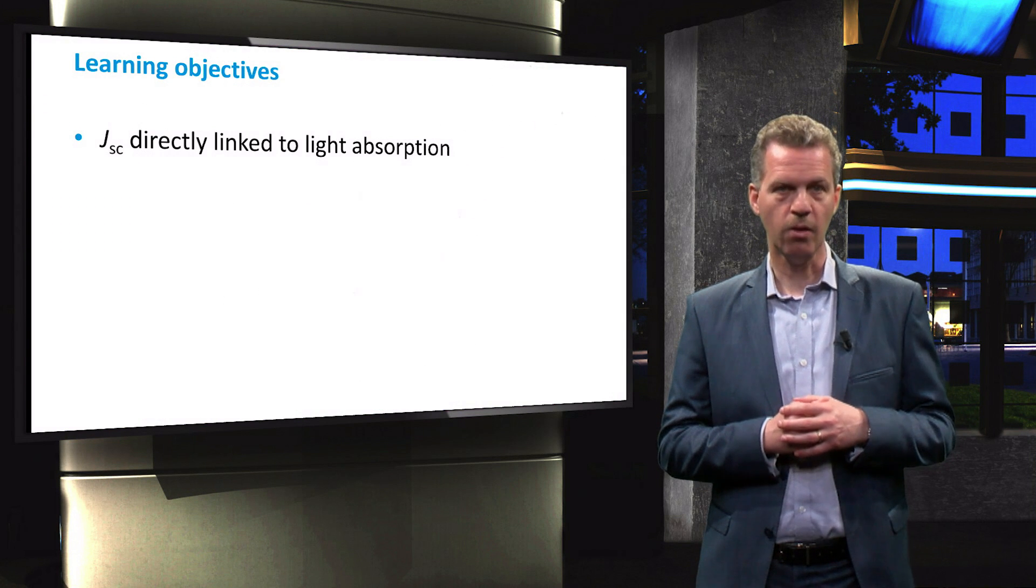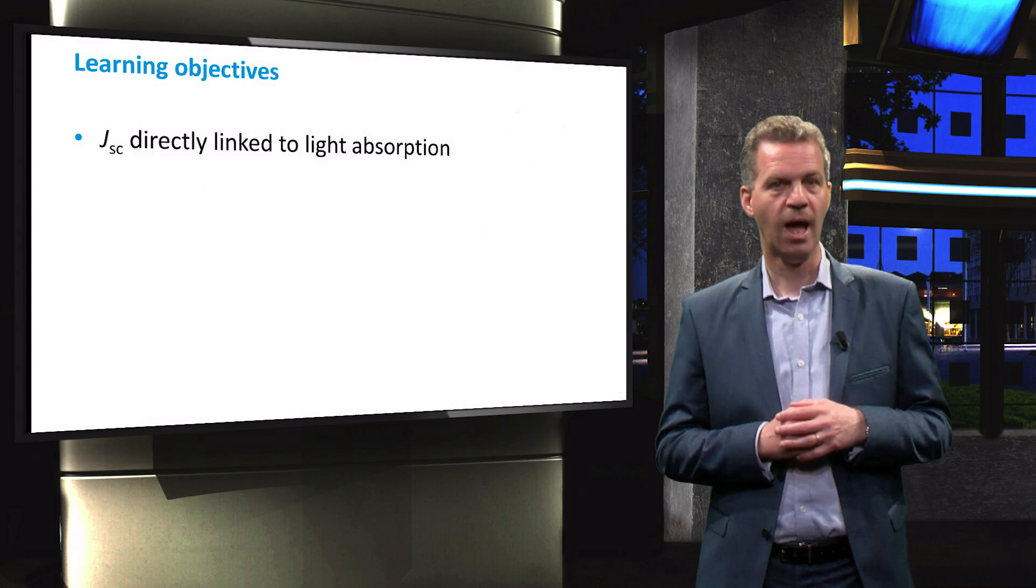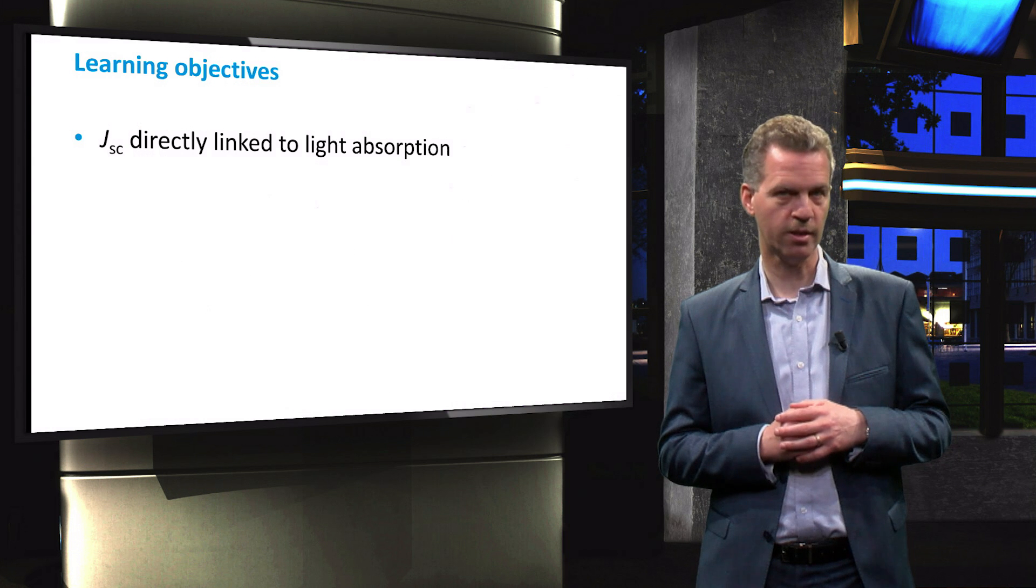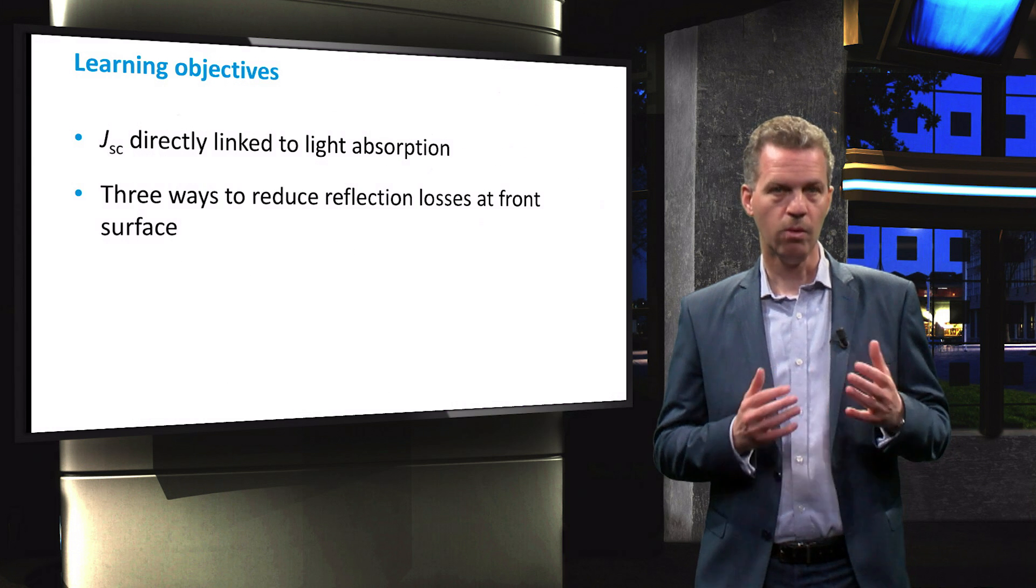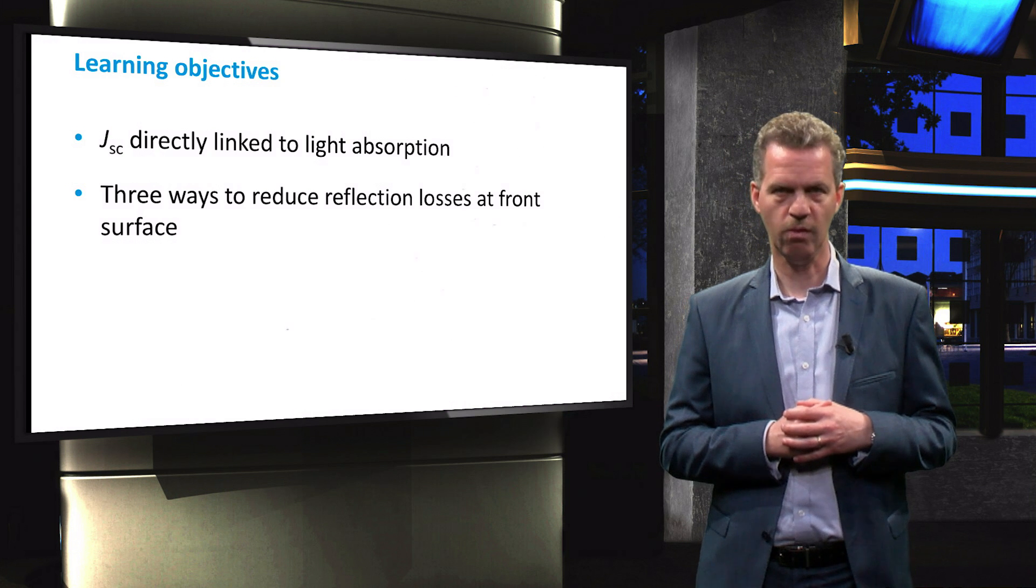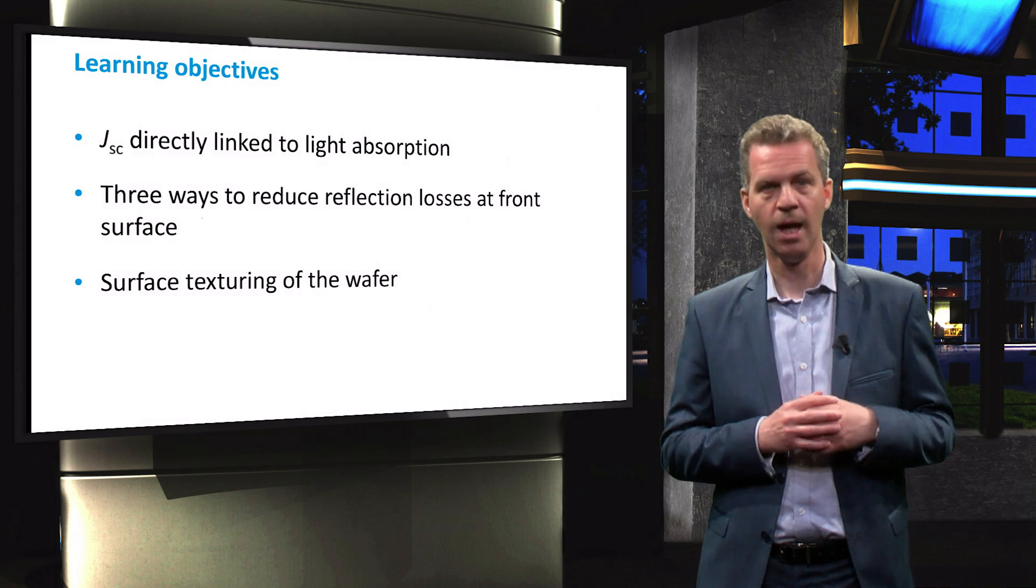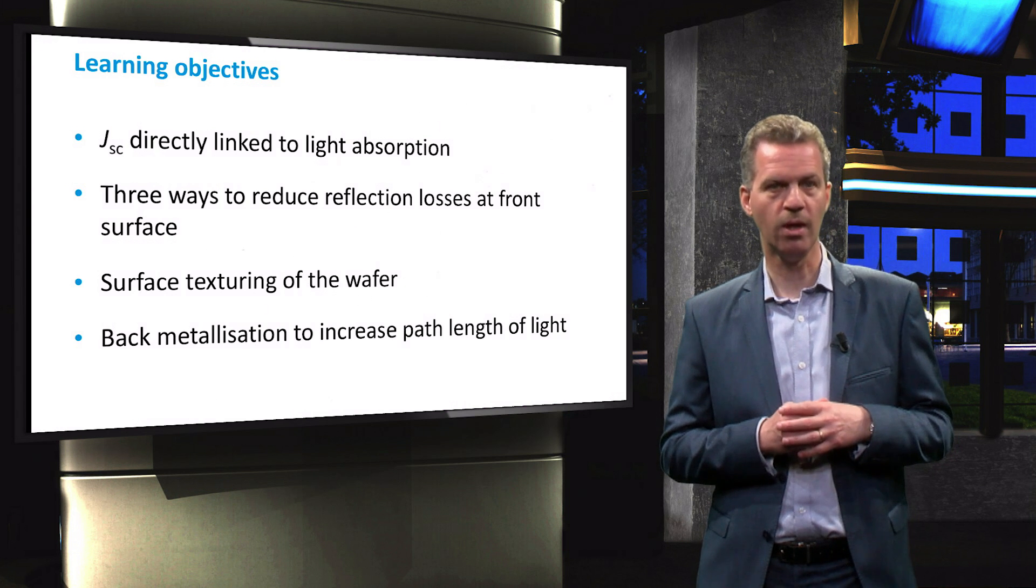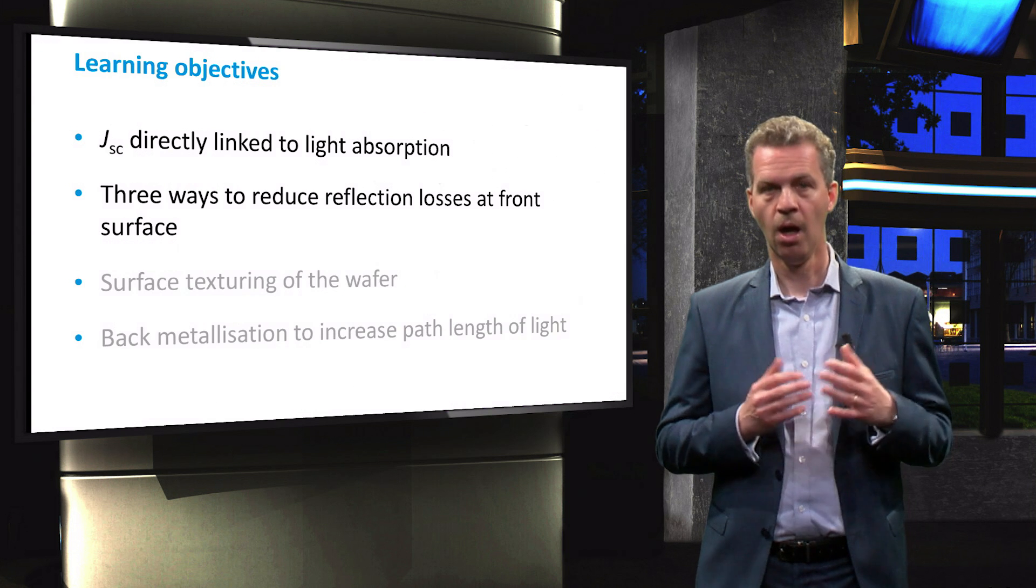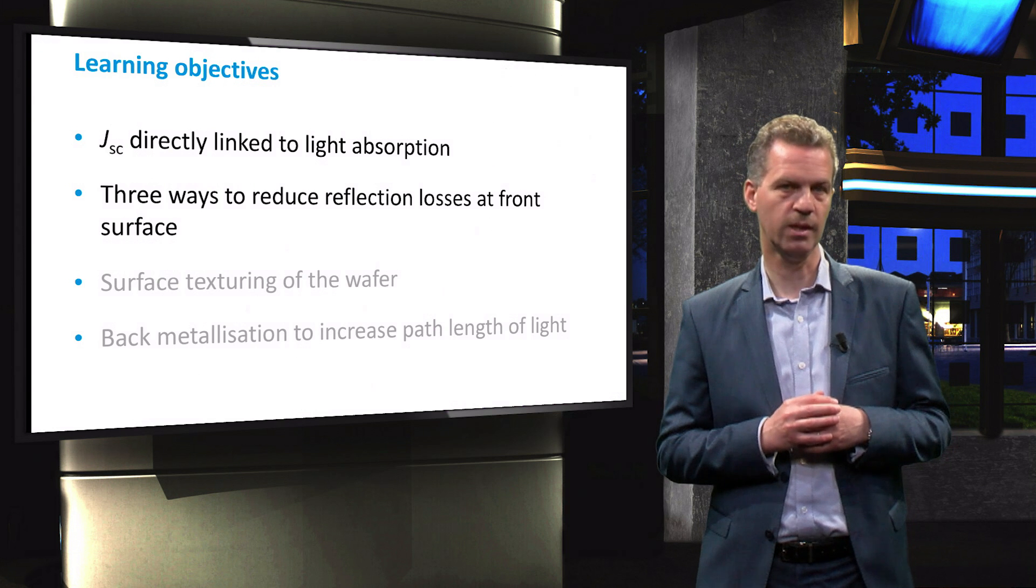You will learn in this video how the short circuit current density is related to light absorption and what we can do to increase the absorption of light in a standard crystalline silicon solar cell. We will demonstrate three different strategies to reduce reflection of light at the front surface including surface texturing, and finally we will show another important effect of the fully metalized back contact. Surface texturing and back metalization will be covered in the next video.